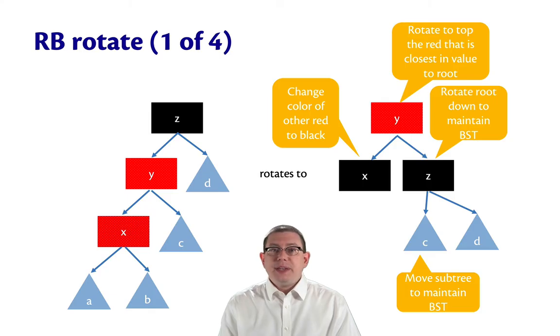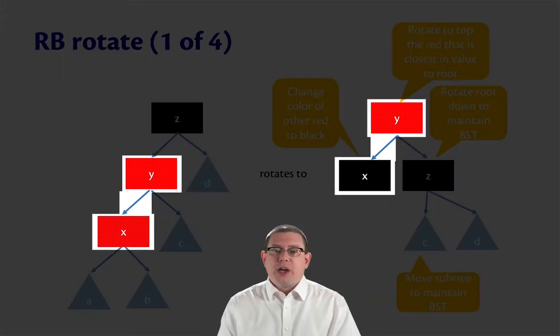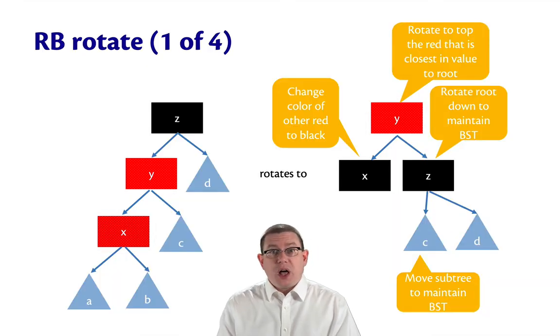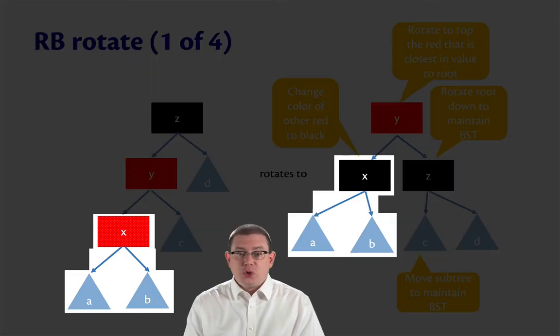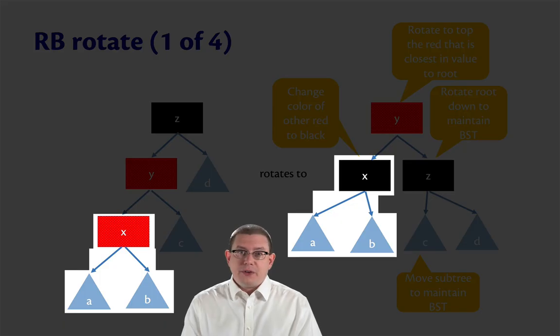Next, we need to deal with X, which was the violation. We'll keep it as a child of Y. It has to be the left child by the BST invariant. And now we will change its color to be black. That fixes the local invariant violation for X and Y. Subtrees A and B can go as the children of X, just where they were before. Nothing has changed about their values. The BST invariant is fine with them being.